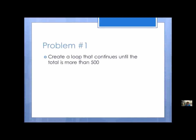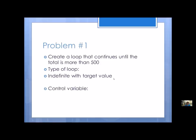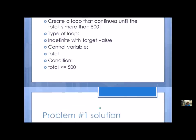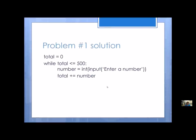Problem number one: create a loop that continues until the total is more than 500. We've got the keyword 'total' and an ending value — my target. So this is an indefinite loop with a target value. The control variable is total, and the condition is less than or equal to 500. How did I know? I've got the word 'until' and 'more than,' so I do the opposite — less than or equal to. Here is an example of what it might look like.